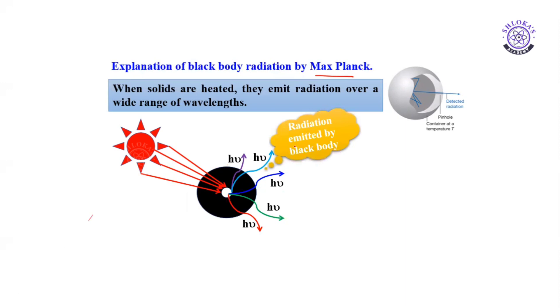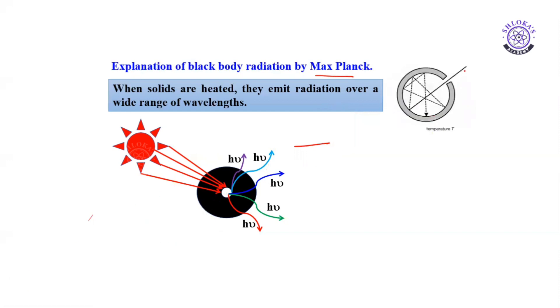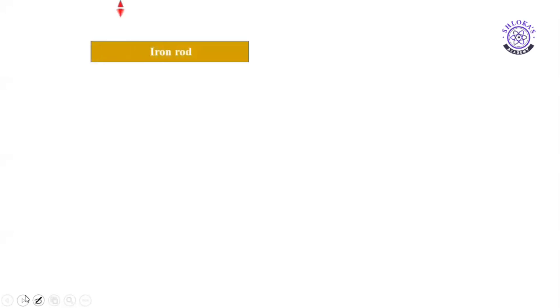The radiation emitted by the black body comes out as different radiations with different wavelengths (denoted H·nu for each). The black body absorbs all types of energy and emits all types of radiations. An ideal body which emits and absorbs radiations of all frequencies is called a black body, and the radiation emitted by such a body is called black body radiation.